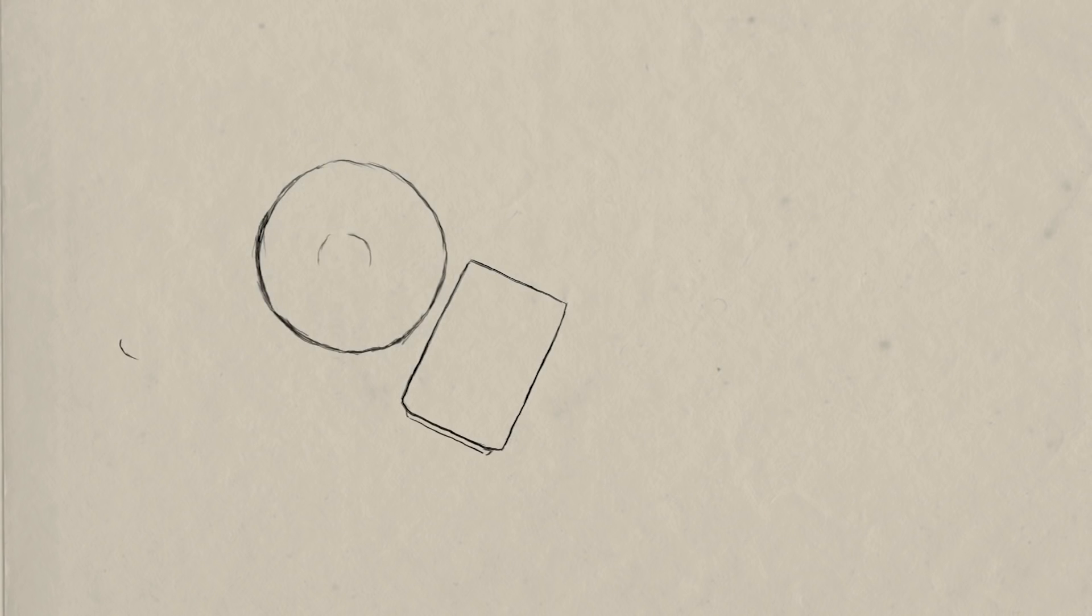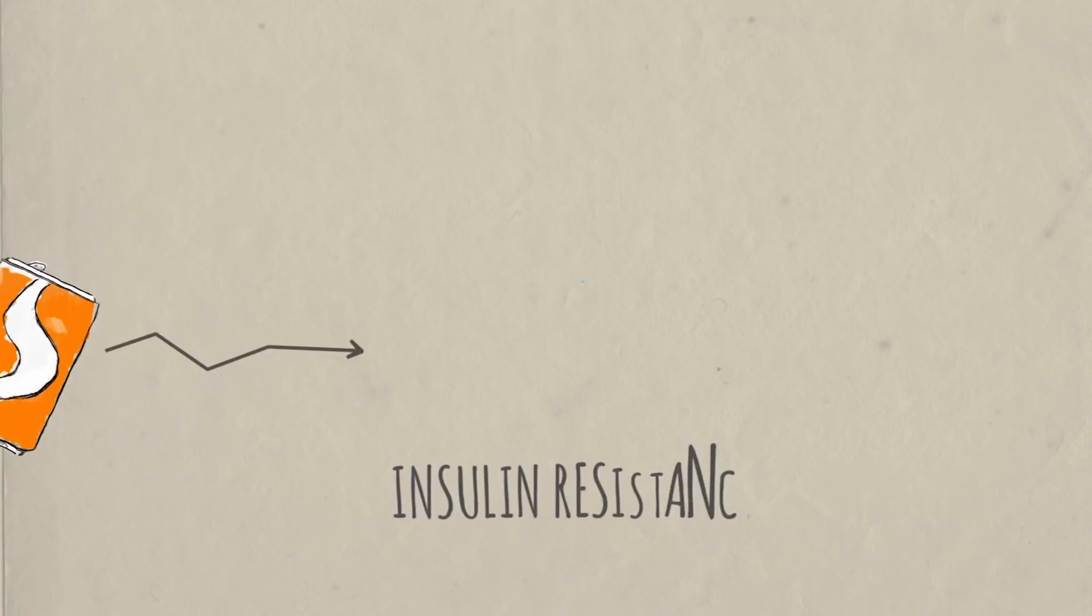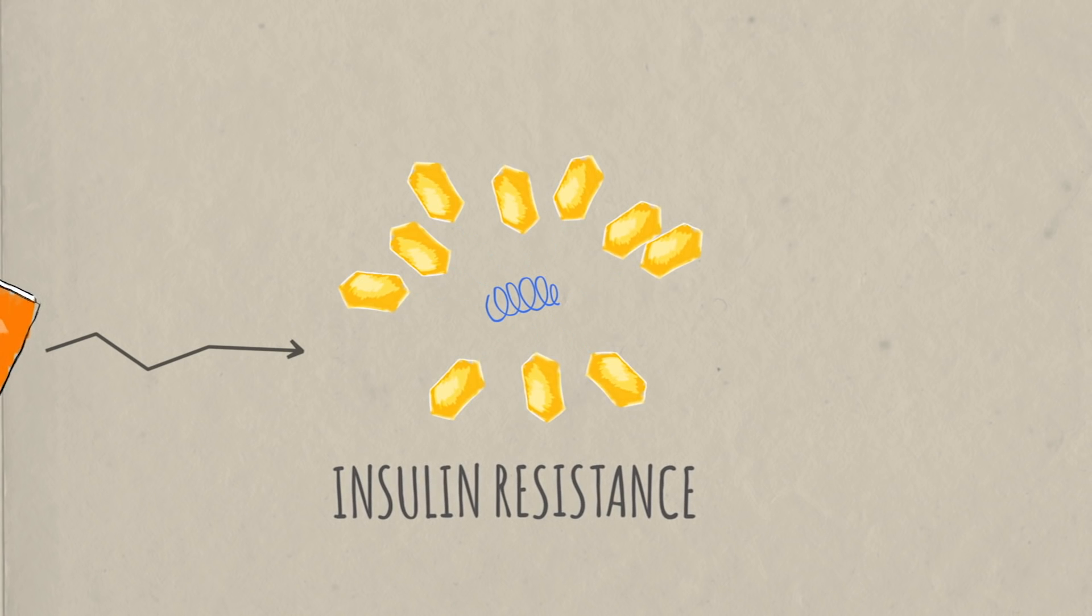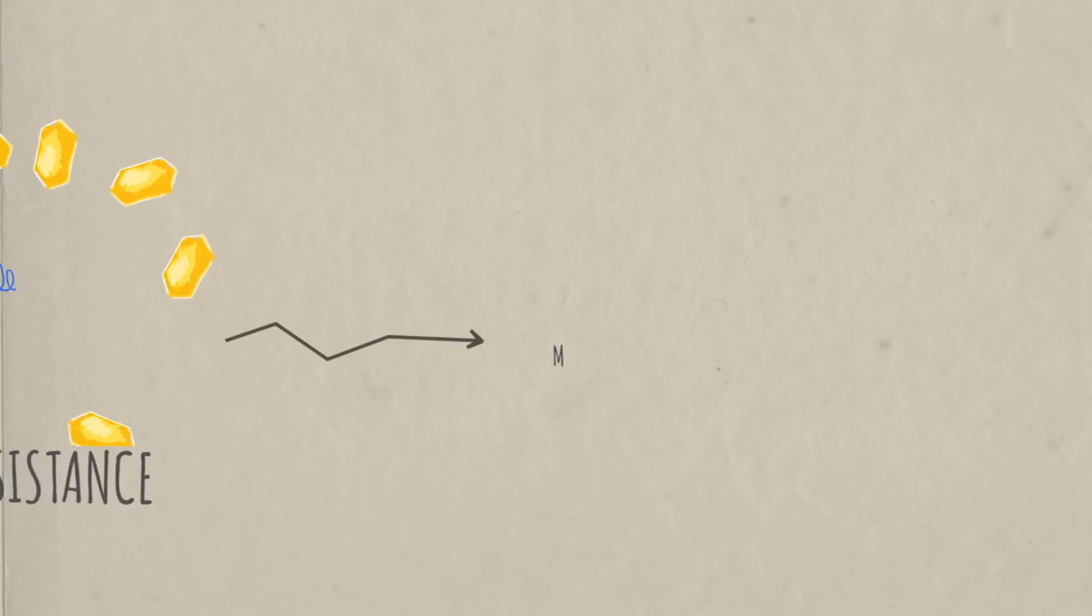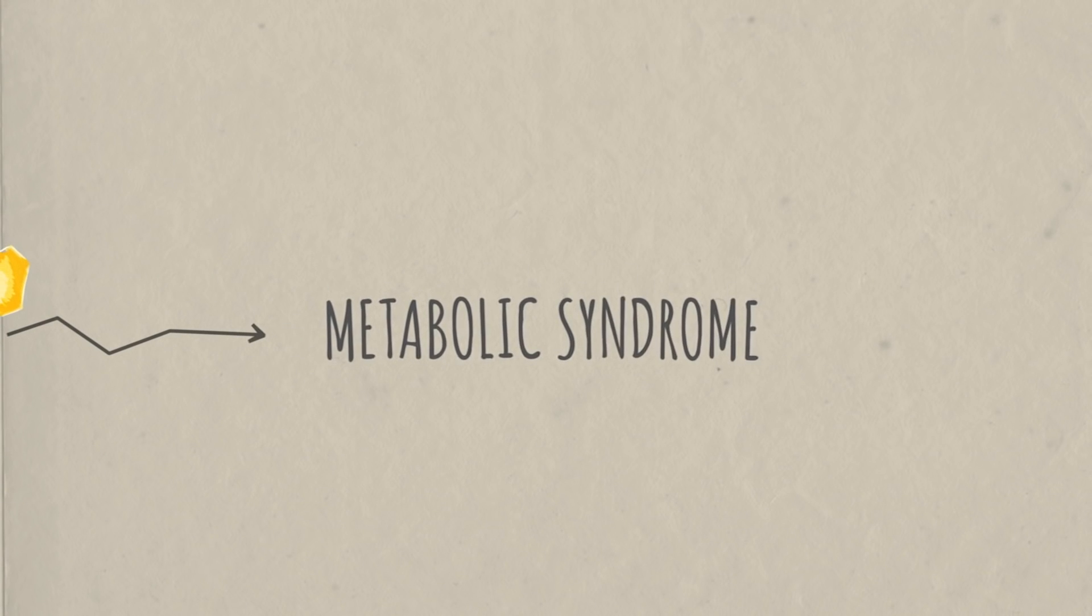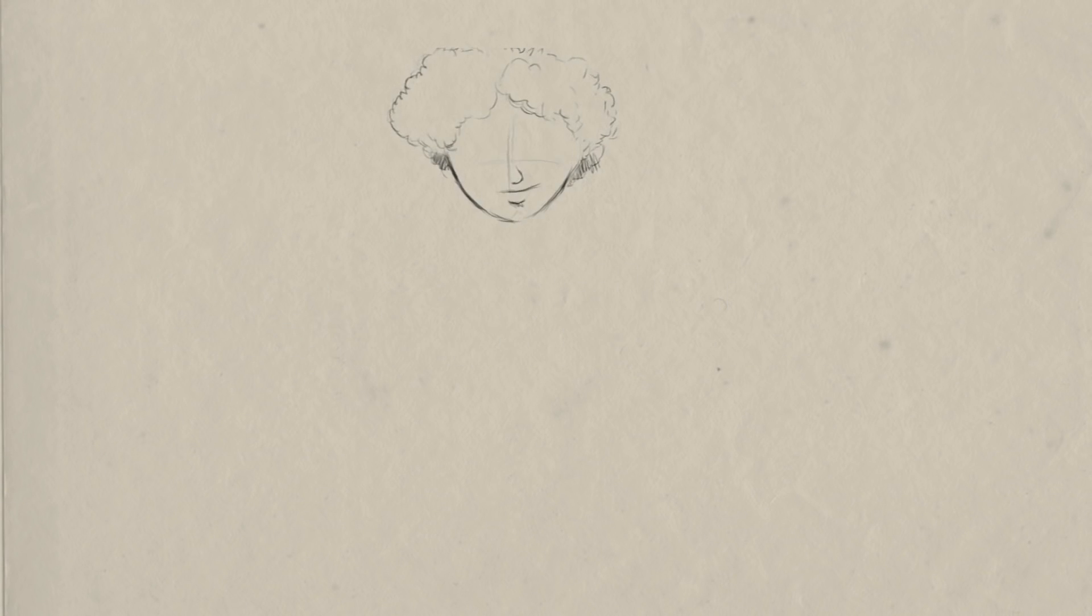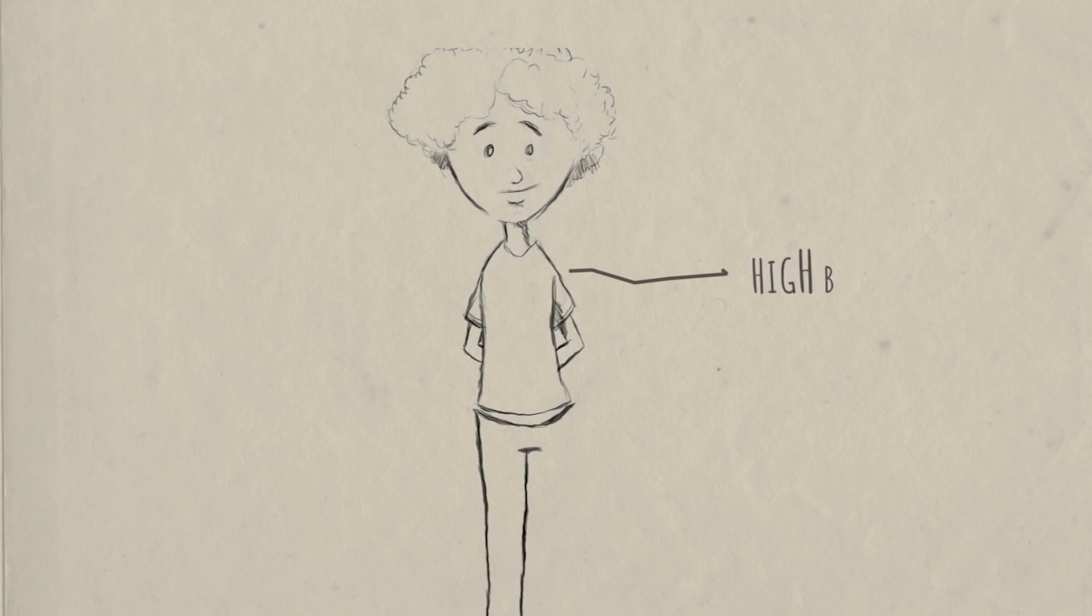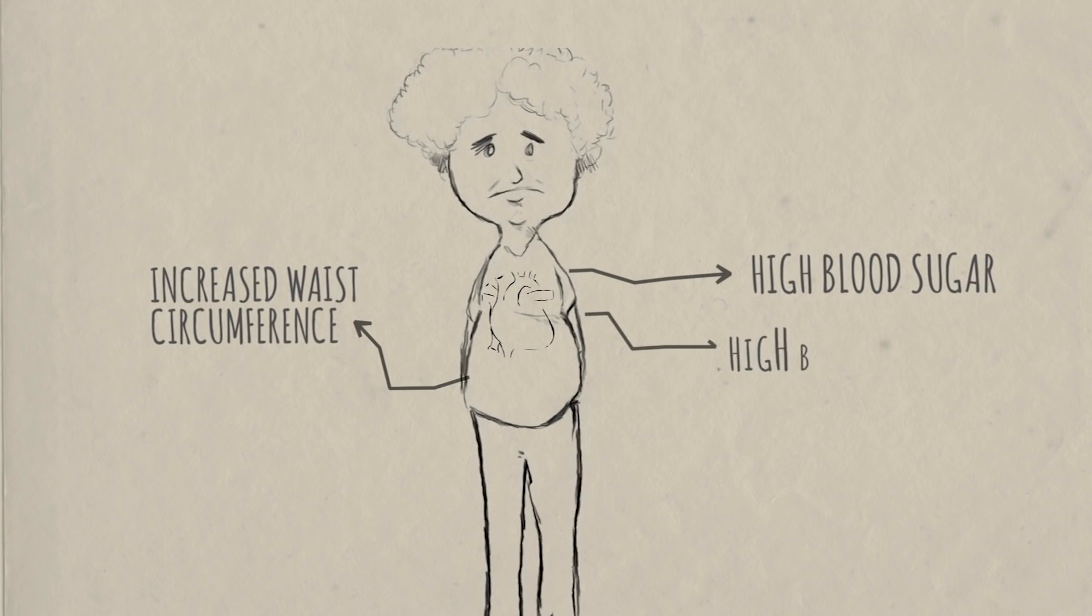Chronically consuming a lot of carbohydrates may lead to insulin resistance, and many scientists believe that insulin resistance leads to a serious condition called metabolic syndrome. That involves a constellation of symptoms, including high blood sugar, increased waist circumference, and high blood pressure.